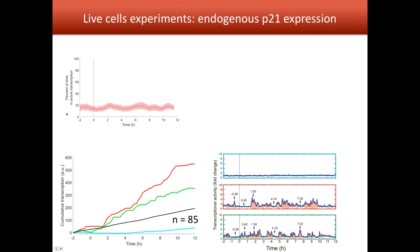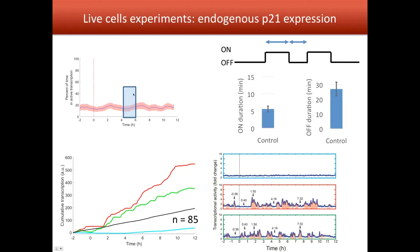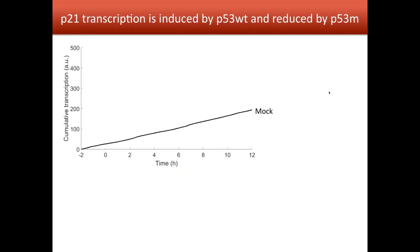Another way to look at this is to take a window of time — for example between four and six hours — and ask: what is the duration of the on and off periods? The on period is roughly 30 minutes sometimes, and sometimes very short — one to two minutes. On average, the on period is slightly more than five minutes and the off period is almost 30 minutes. So to recapitulate: in unstimulated cells we have a burst of roughly five minutes every 30 minutes on average.